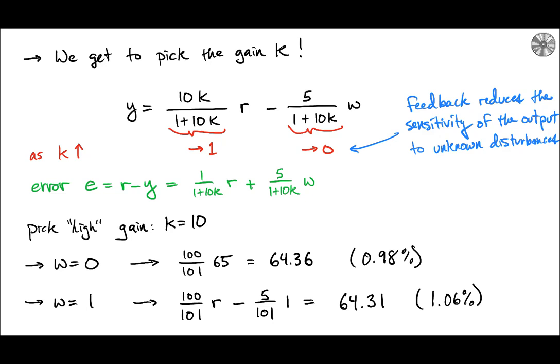So if we look again at the error e is equal to r minus y we can calculate what it looks like and so that just creates this expression in green. And so if we pick just a random slightly large value of the gain k equal to 10, then at zero road grade w is equal to zero we are at 64.36 miles an hour. So that's a very small error away from our desired speed and so that's pretty decent performance. It's not exact but the benefit that we get now is that as we increase the road grade when w is equal to one, now we compute that error and that error is still only at one percent. And so we have a controller that's very insensitive relative to the road disturbance w.